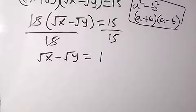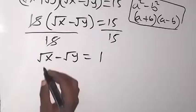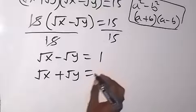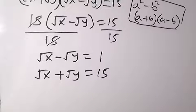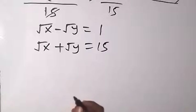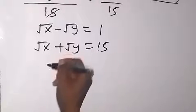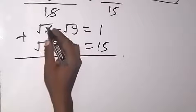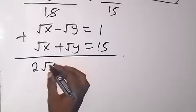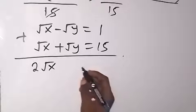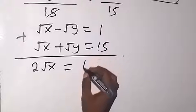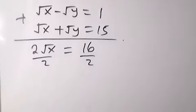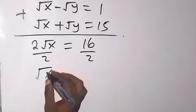This gives us root x minus root y equals to 15 divided by 15, which is 1. So we have root x minus root y equals 1. Then bringing down equation 1 — root x plus root y equals 15 — and adding to eliminate root y: root x plus root x gives 2 root x, equals 1 plus 15, which is 16.